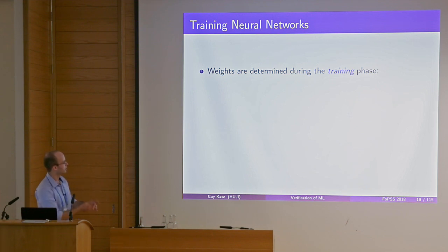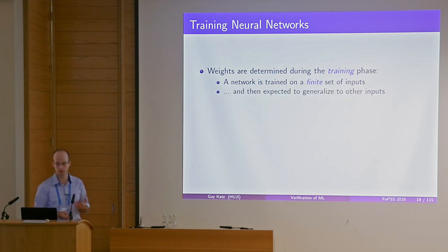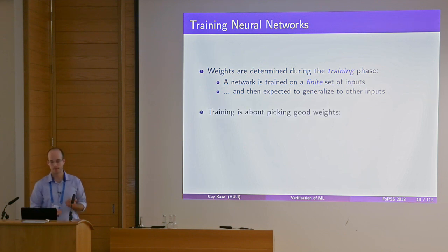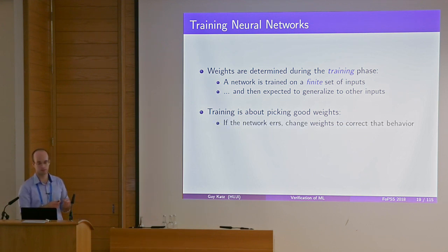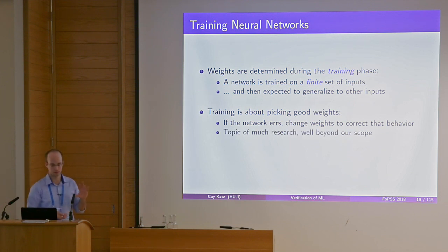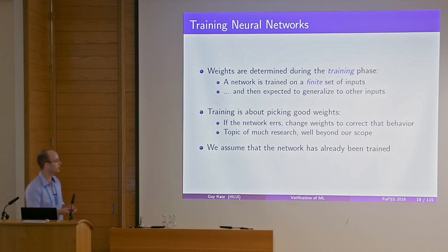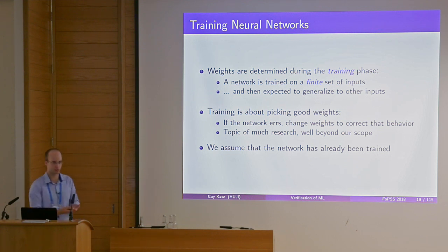Neural networks are created by training, typically on a finite set of inputs, and are then expected to generalize to inputs not seen before. Training is about picking good weights — if the network behaves incorrectly, the machine learning algorithm adjusts the weights to correct the behavior. For verification purposes, we assume the network has already been trained: the topology and weights are determined, and we just want to verify certain properties.